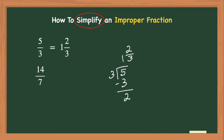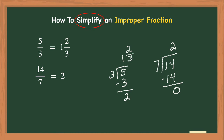Now let's take a look at fourteen-sevenths. Again, that fraction bar signals that I need to divide. I take 14 divided by seven — seven goes into 14 two times. Two times seven is 14, and I have a zero remainder. When I have a zero remainder, the improper fraction reduces to a whole number, which in this case is two. You can also do this with mental math, since 14 divided by seven is two.